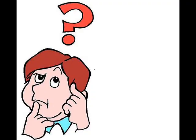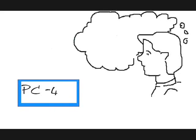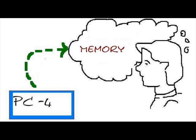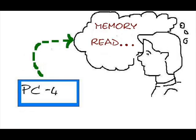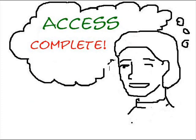So what does a control unit do when a cache miss occurs? Step 1: Send the original PC value to the memory. Step 2: Instruct the main memory to perform a read and wait for the memory to complete its access.